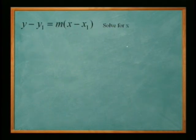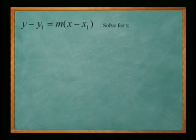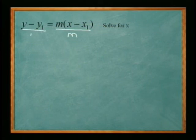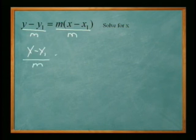This is our last one: y minus y1 equals m times the quantity x minus x1, and we want to solve for x. We look at the right-hand side where x is. We want to get rid of everything else there — the m and the x1. Starting with m: it's multiplied by the quantity x minus x1, so we do the opposite and divide both sides by m. That gives us y minus y1 over m equals x minus x1.